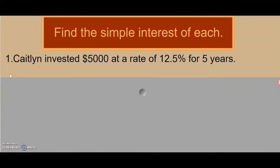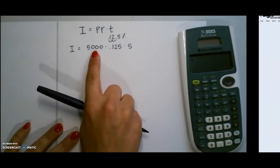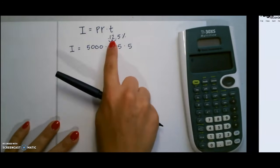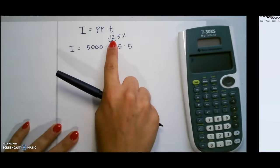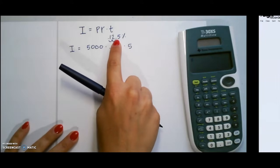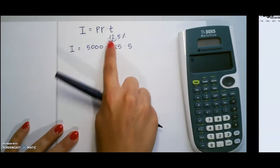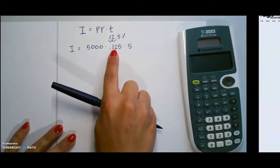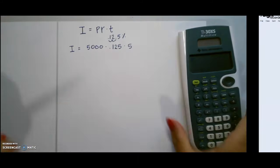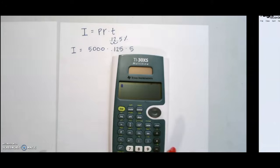Let's look at some examples. Caitlin invested $5,000 at a rate of 12.5% for 5 years. So the principal amount is $5,000. 12.5% is the rate, and we need to change that to a decimal by moving the decimal place two places to the left, which makes it .125. And our time is 5 years. So we simply plug this into our calculator.